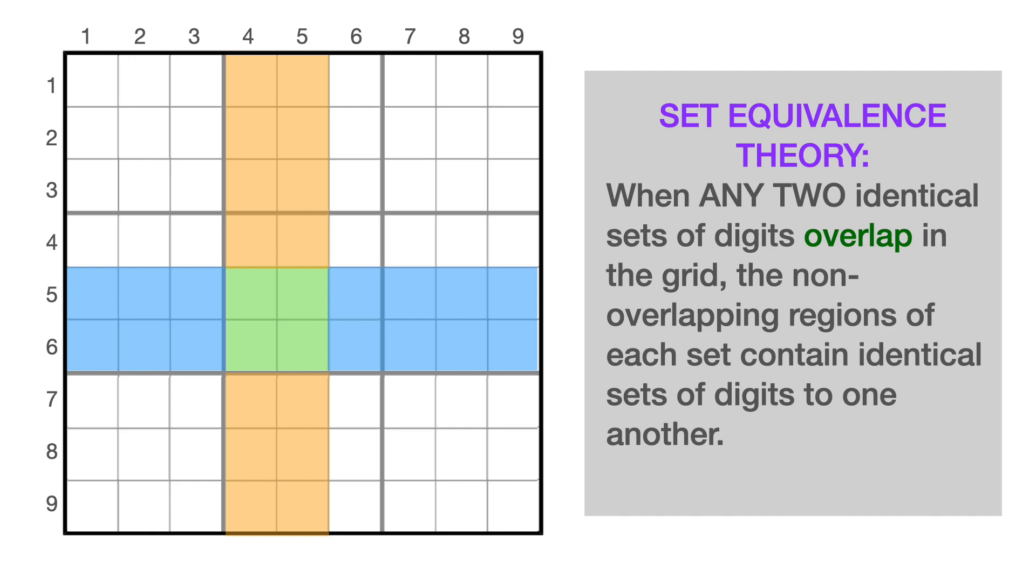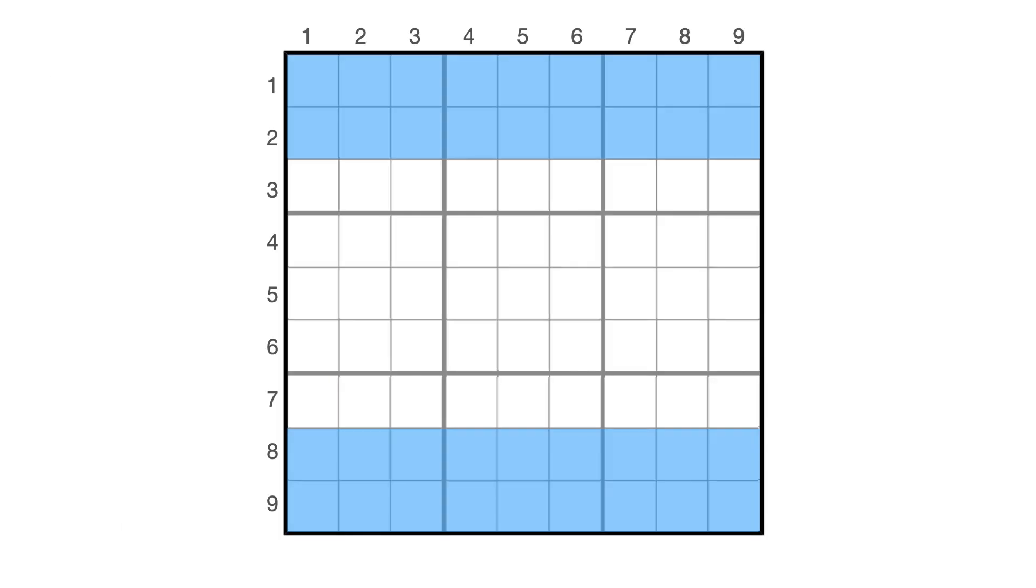But what does any of this have to do with our friend Fistemafell and his ring? Well, let's move on to our third observation. What do we have here shaded in blue? Well, this time it's four sets of the digits one through nine, rows one, two, eight, and nine. Nothing too crazy. This time they're split into two non-adjacent chunks, but it's still four sets of the digits one through nine.